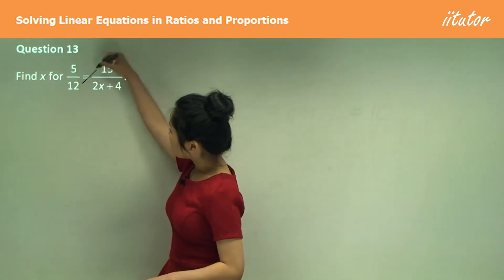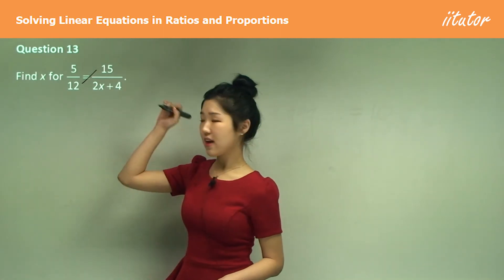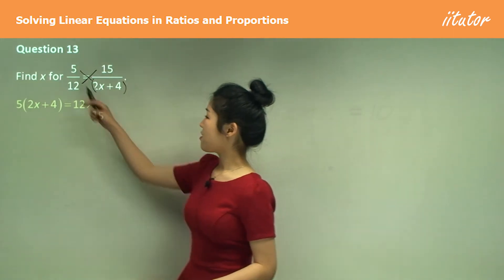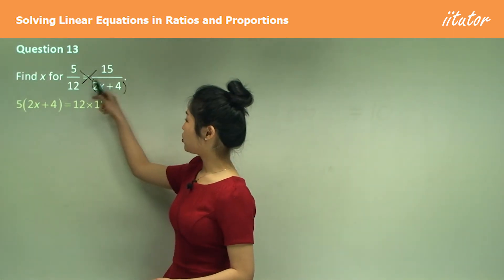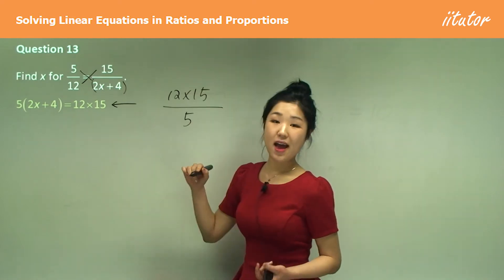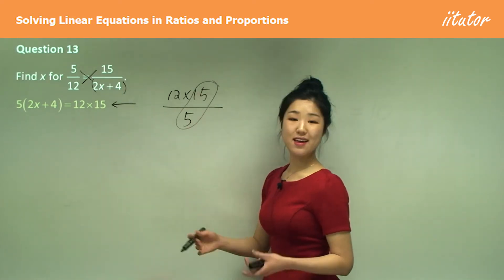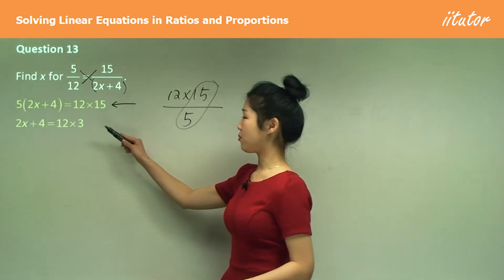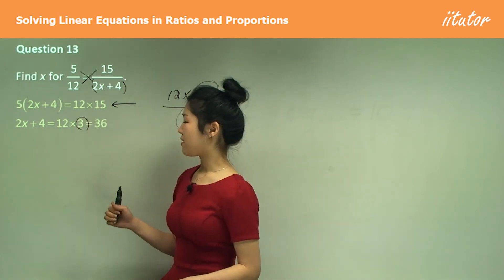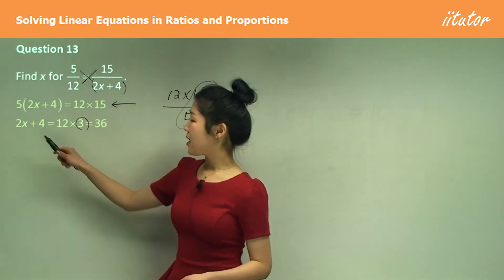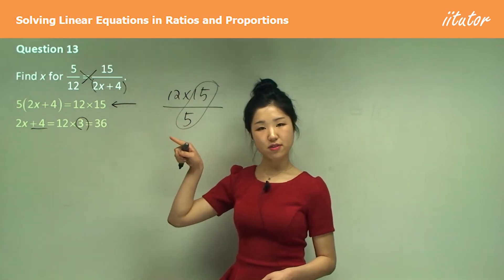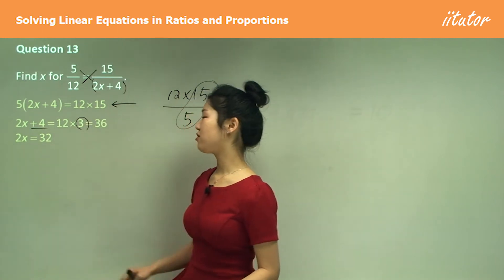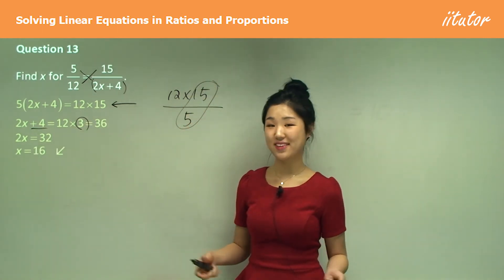Question 13: multiply 12 and 15 together, and 5 with (2x + 4). So 5(2x + 4) equals 12 times 15. Since 15 and 5 share a common factor of 5, divide: 15 over 5 is 3, and 12 times 3 is 36. Now subtract 4: 36 minus 4 is 32. Then 32 divided by 2 gives x = 16.